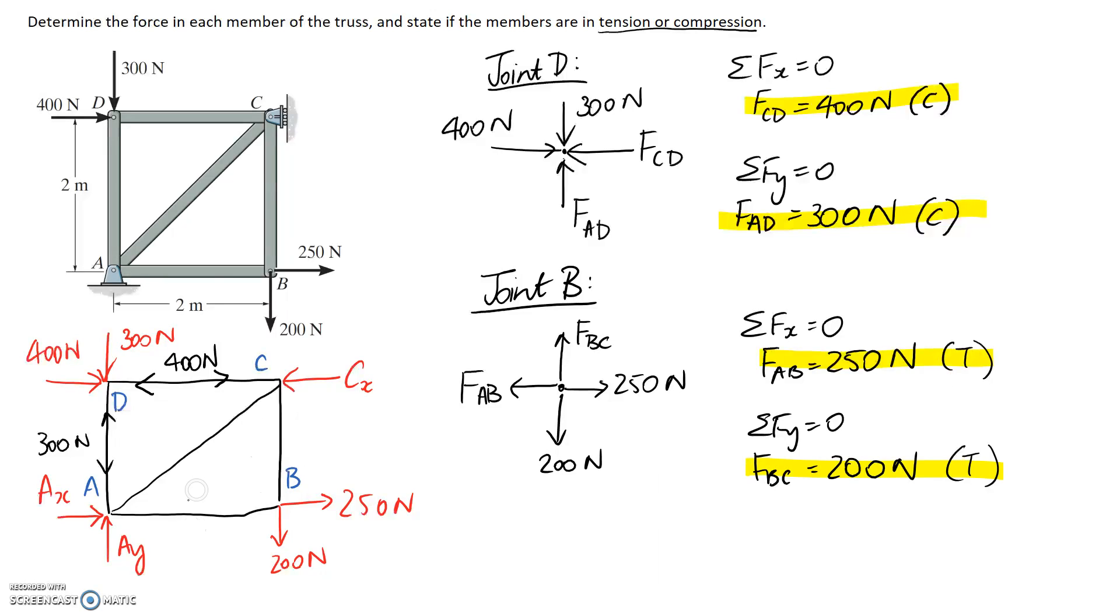If we come back over here, we can label it on our diagram. So we've said that BC is in tension, so it's pulling away from the joint. Let's make that a bit neater. And it's 200. This one as well was in tension, so it's pulling away, and it's 250.